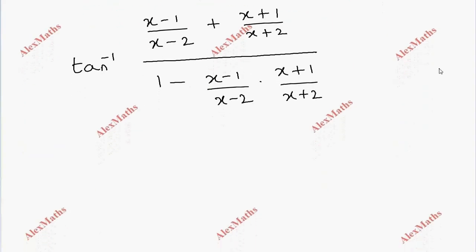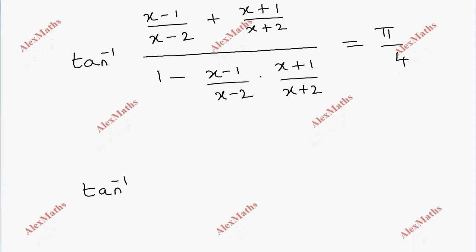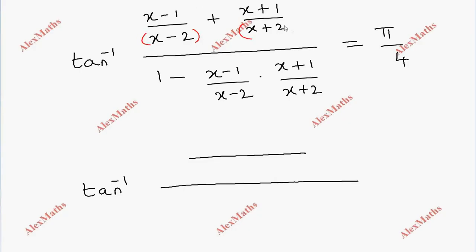If the numerator is done, we will show the same number. So tan inverse — and at the same time we will have solved the entire term of the other side — equal to pi by 4. In the numerator, the two terms involve x minus 2, so x minus 2 into x plus 2.